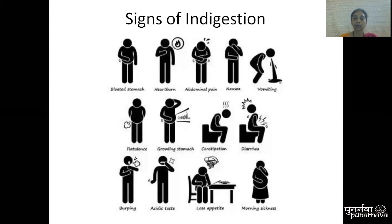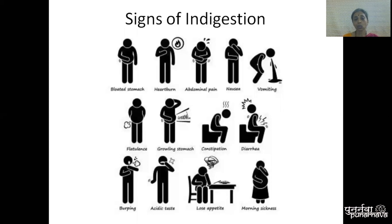Often people come with an altered perception of taste, and the cause is Aam. They are usually prescribed different mouthwashes, but it doesn't help because the problem is not with oral hygiene — the problem is with digestion. This acidic or altered taste in the mouth is a manifestation of Aam or toxin production, and they usually will have a coated tongue. Now with the current pandemic of COVID, altered perception of taste or failure to perceive taste is one of the symptoms of COVID — and Ayurveda mentions this as a symptom of Aam.